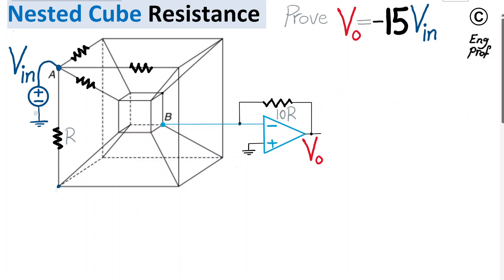A nested cube or double-cube resisted network is shown connecting node A, connected to V-in, to node B, which connects to the inverting input terminal of this op-amp. Via 10R it goes to the output V-out. We want to show that V-out is simply negative 15 times V-in. That's a very interesting and simple relation.